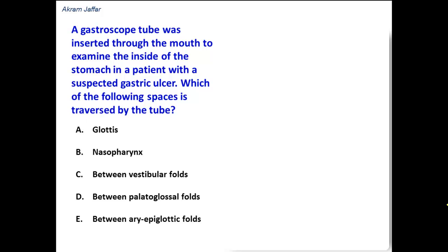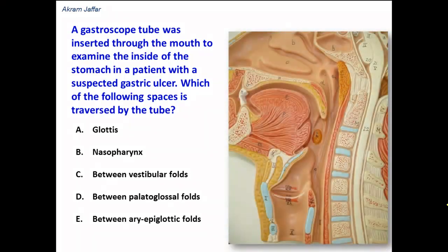A gastroscope tube was inserted through the mouth to examine the inside of the stomach in a patient with suspected gastric ulcer. Which of the following spaces is traversed by the tube? The tube is passed through the mouth, then into the oropharynx, then the laryngopharynx, and then into the esophagus in order to reach the stomach. Let's see the options.